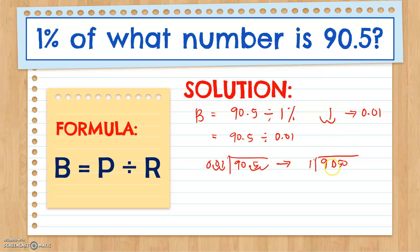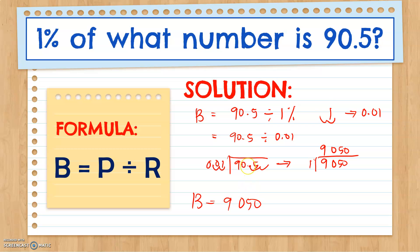Any number divided by 1 gives the number itself, so our base is 9,050. Therefore, 90.5 is 1% of 9,050.